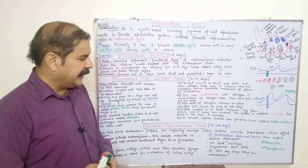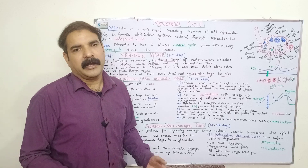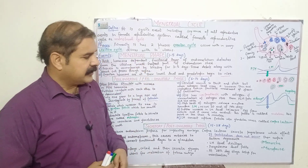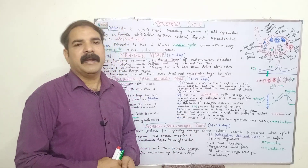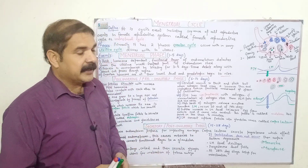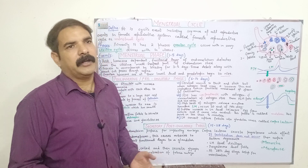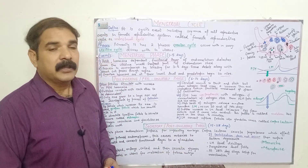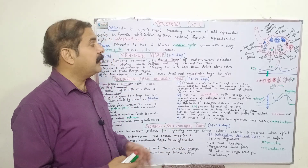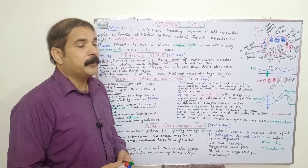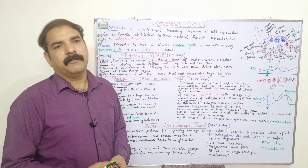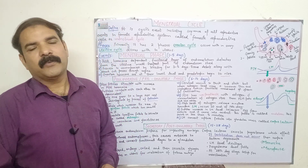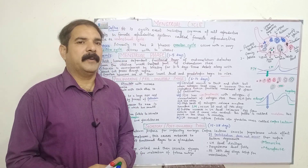The first menstruation is called menarche, and when the menstrual cycle ends in females — typically at the age of 48 to 50 — it is called menopause. This is all about the menstrual cycle. I hope you understood it well. If you have any questions, you can ask in the feedback. Until the next video, thank you very much. Assalamu Alaikum Warahmatullahi Wabarakatuh.